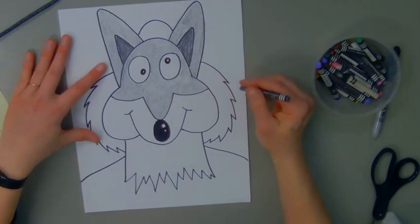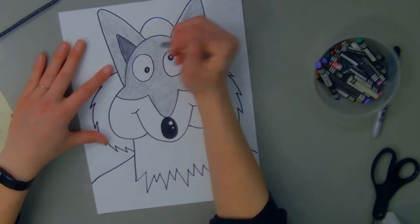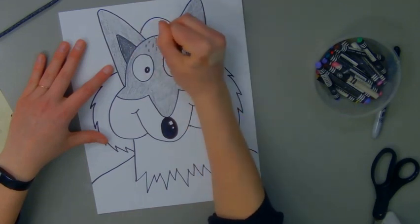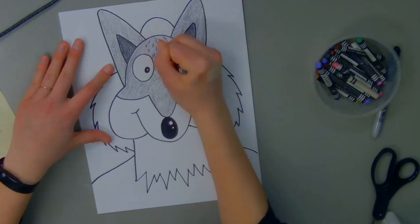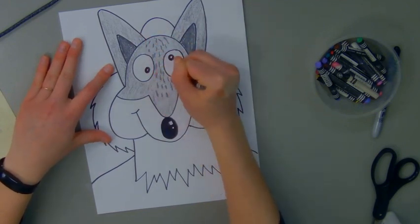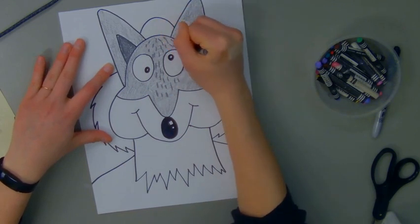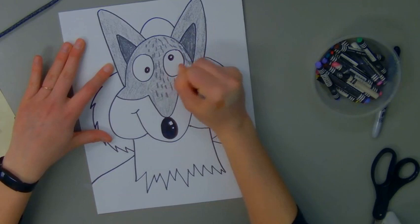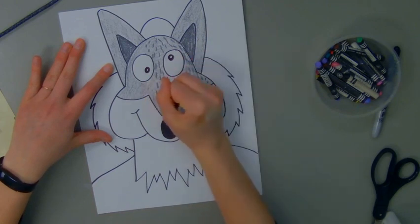So now on his face, I'm going to press hard this time with the same gray crayon. And I'm going to add texture lines. So little short vertical lines, not matching them up in perfect rows because I want it to look like fur. I'm going to fill this whole space down to his nose.